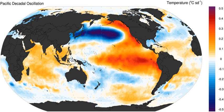The Pacific Decadal Oscillation is a robust, recurring pattern of ocean-atmosphere climate variability centered over the mid-latitude Pacific Basin. The PDO is detected as warm or cool surface waters in the Pacific Ocean, north of 20 degrees north.